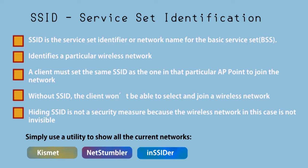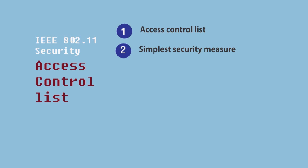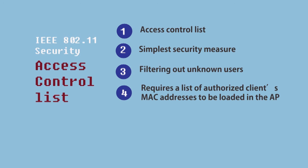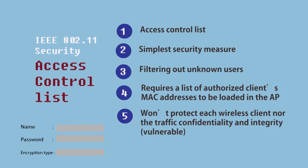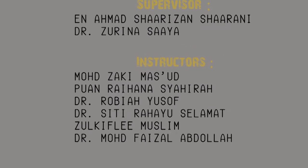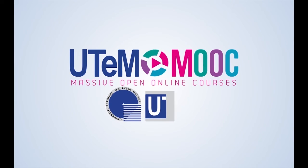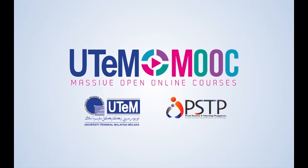A user utility can show all current networks. The access control list is the simplest security measure — it filters out unknown users and requires a list of authorized clients' MAC addresses to be loaded in the AP. The process control list also involves information binding in the AP.